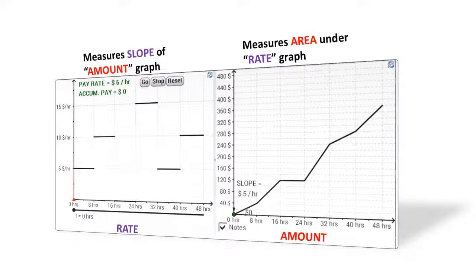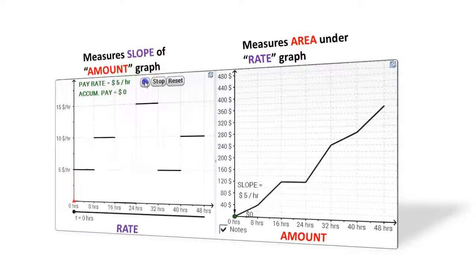On the right, you'll see that the amount of the paycheck will track that area, and the slope of the graph is equal to the rate of pay, $5 per hour, $10 per hour, and so forth.